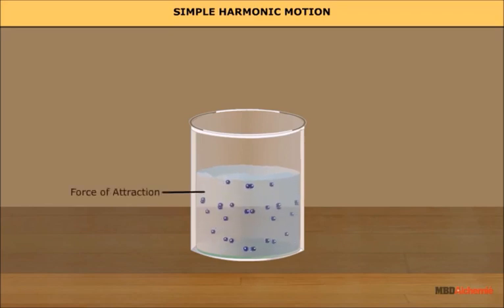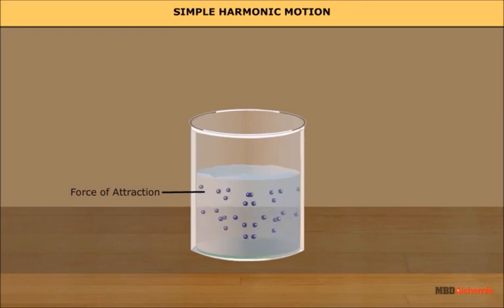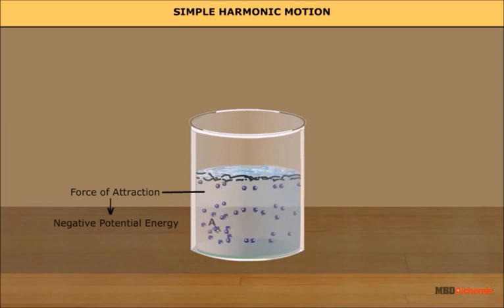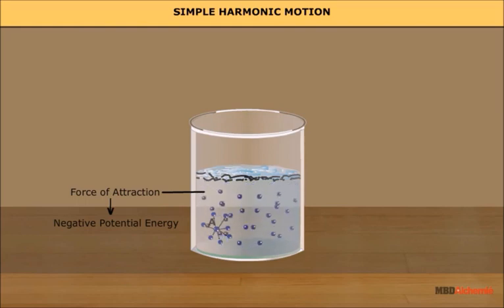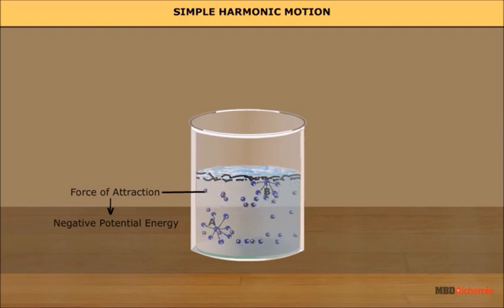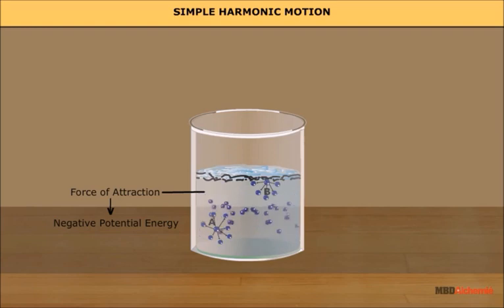Surface tension is a property of liquids arising from the force of attraction between molecules, which keeps them together. This attraction results in a negative potential energy for each molecule. Consider molecule A, which is well inside the liquid — it is subjected to forces of attraction from all directions, resulting in some negative potential energy.